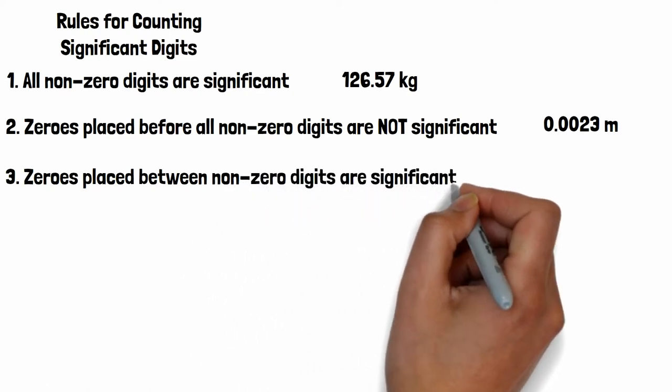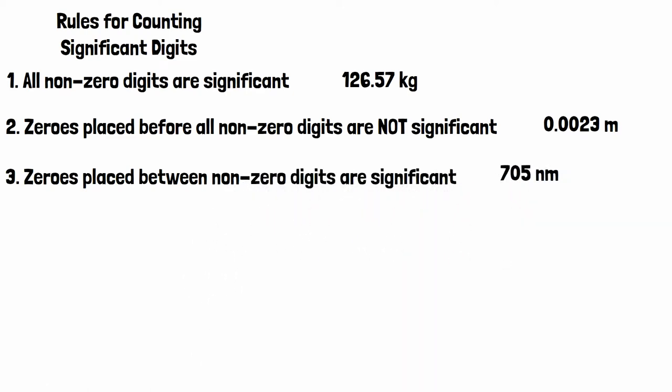Third, zeros placed between nonzero digits are significant. This has three significant digits.